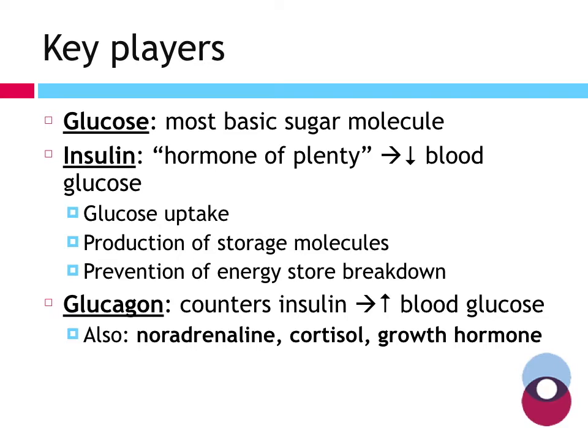Glucagon plays less of a role in this presentation but is still very important. It's the natural hormone that counters insulin, acting to increase blood glucose, and is also released from the pancreas. Other hormones with antagonistic effects against insulin — encouraging an increase in blood glucose — include noradrenaline, cortisol, and growth hormone.